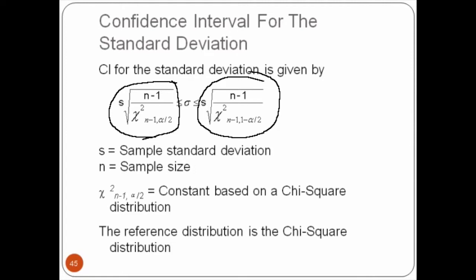When sigma was known, we used normal distribution. When sigma was not known, we used t-distribution. In this case, we are calculating confidence interval for sigma itself.